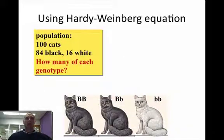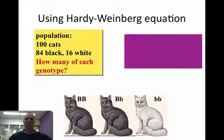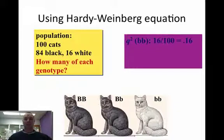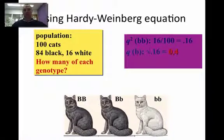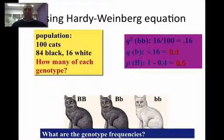Let me give you an example. If we had a population of 100 cats, and 84 of them were black and 16 of them were white, we wouldn't really know what percentage were big B's and what percentage were little B's. But we could work out the problem. If we said that q was the recessive allele, then we'd have 16 out of 100 cats are white, so q squared would be 0.16. To find q, we simply take the square root of 0.16, so little b occurs 0.4 times. And to find big B, we simply subtract that from 1.